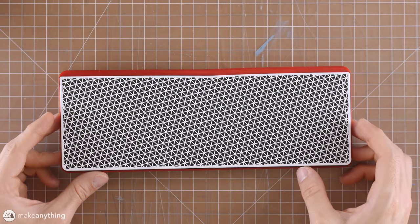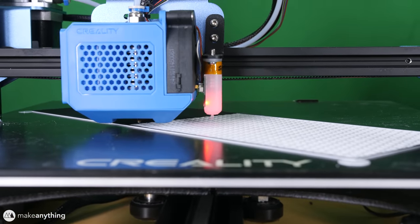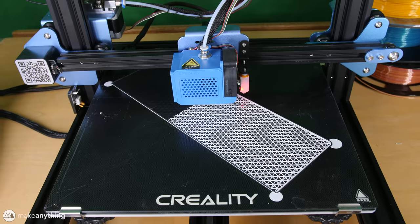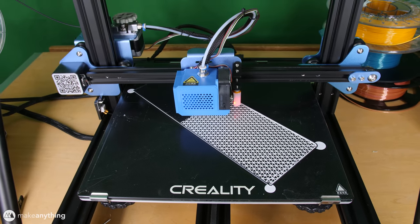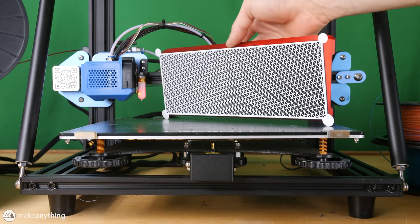Then there's this print, which was actually just made using the blank version of the model. But by setting the solid bottom layers to 0 in my slicer, I was able to expose this triangular infill. And combined with a filament swap, well, that's another way to create this really cool pattern.